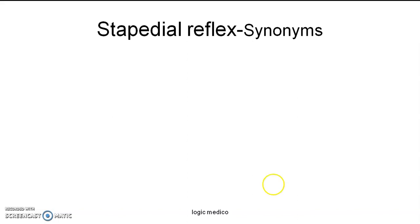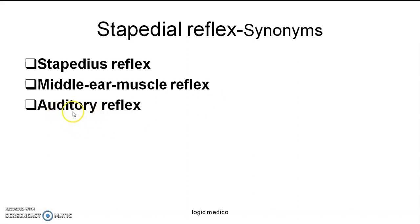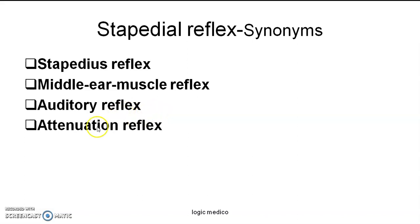Going to the synonyms of stapedial reflex: it is also called stapedial reflex because it is mediated by a muscle called stapedius, which is a middle ear muscle — therefore the name middle ear muscle reflex. It is involved in control of audition, so it is called auditory reflex. This reflex is concerned with diminishing the sound wave reaching the inner ear, so the reduction is called attenuation — thus it is called attenuation reflex.